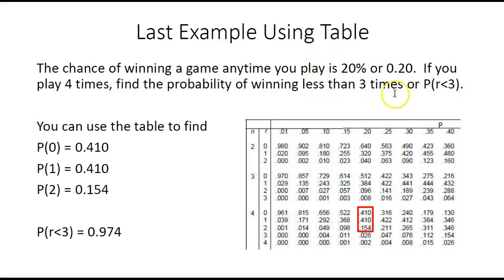In the table, we find R for 0, 1, and 2. We add these probabilities to get 0.974.